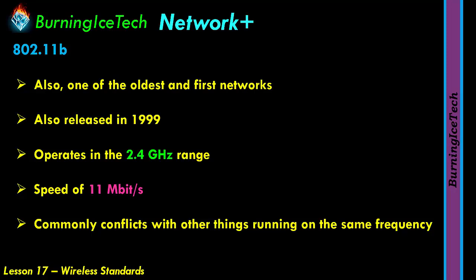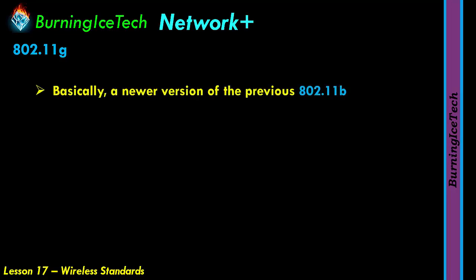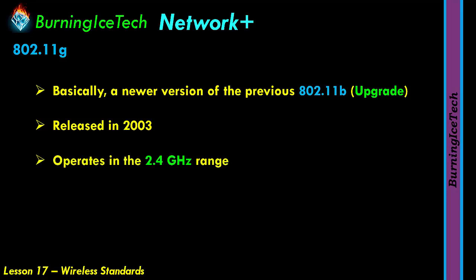Moving on to the third one on our list — 802.11g. This is basically a newer version of the previous 802.11b — an upgrade, if you will. This standard was released in 2003, unlike the previous two which were released in 1999. The 802.11g standard operates at the 2.4 GHz range, same as 802.11b, which tends to conflict with a lot of things. Unlike 802.11b, this newer 802.11g standard runs at a speed of 54 Mbps, matching that of the 802.11a standard.